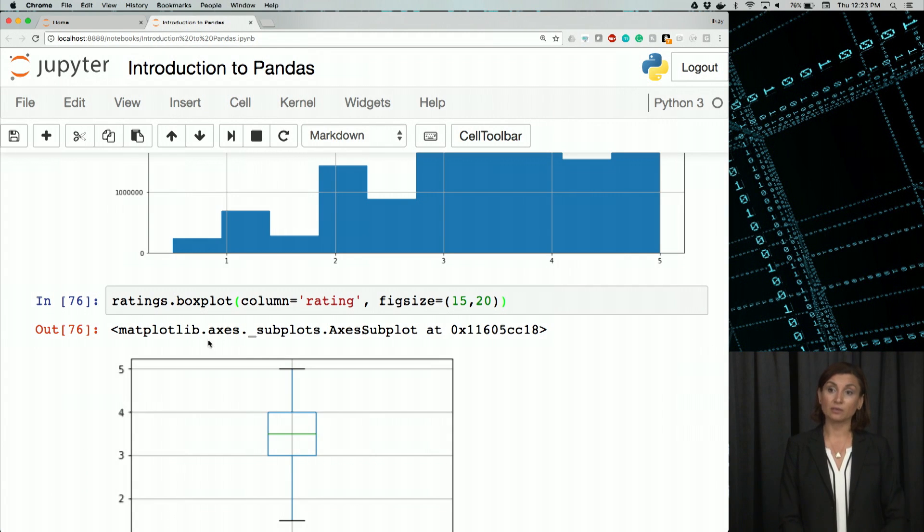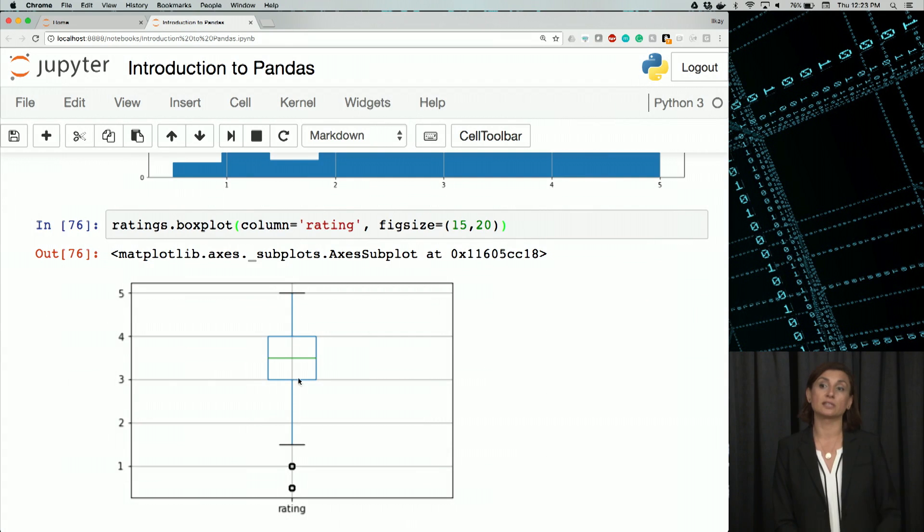And we'll see, since we have only one column that we gave as a data set, we'll see a boxplot of that data.